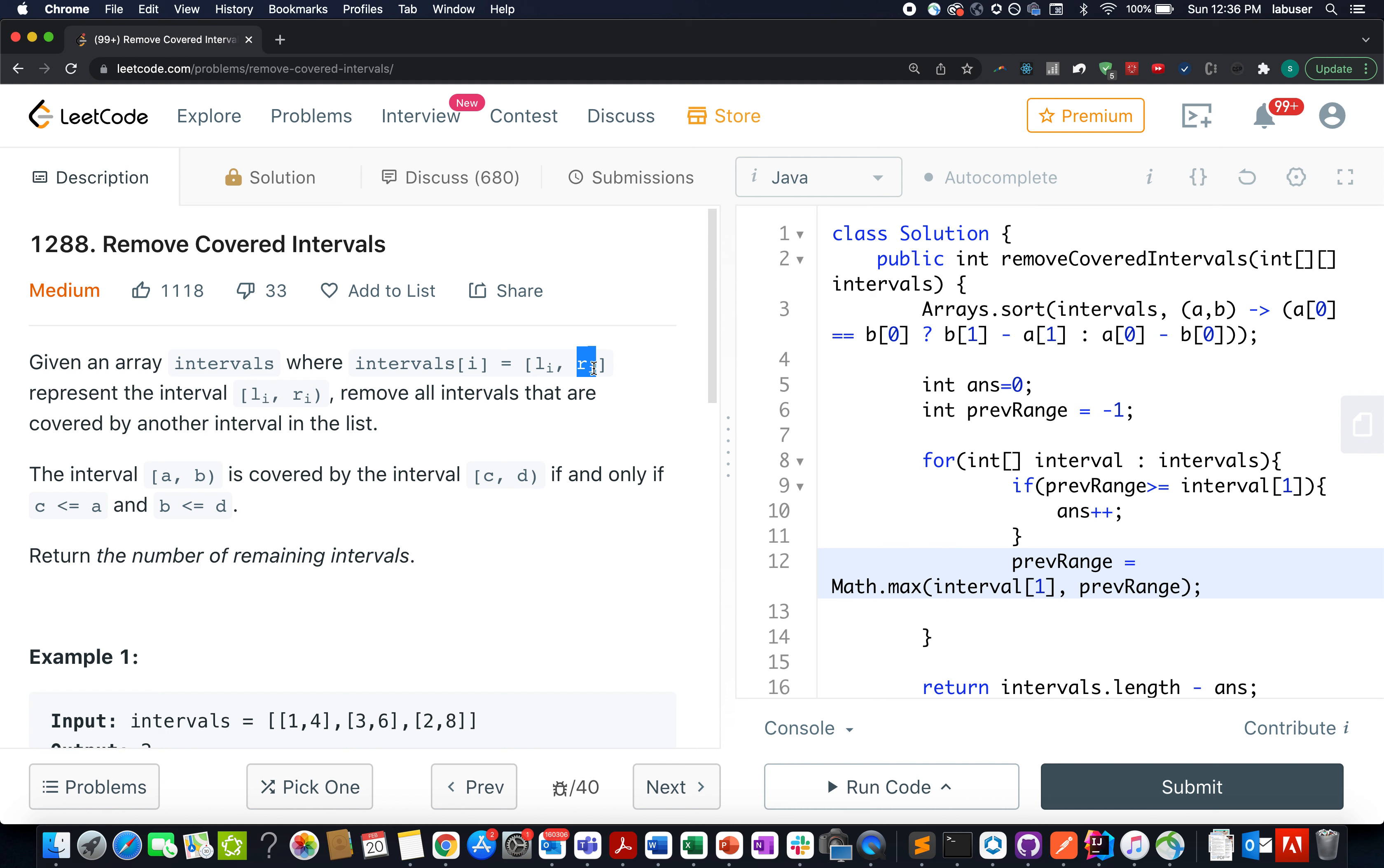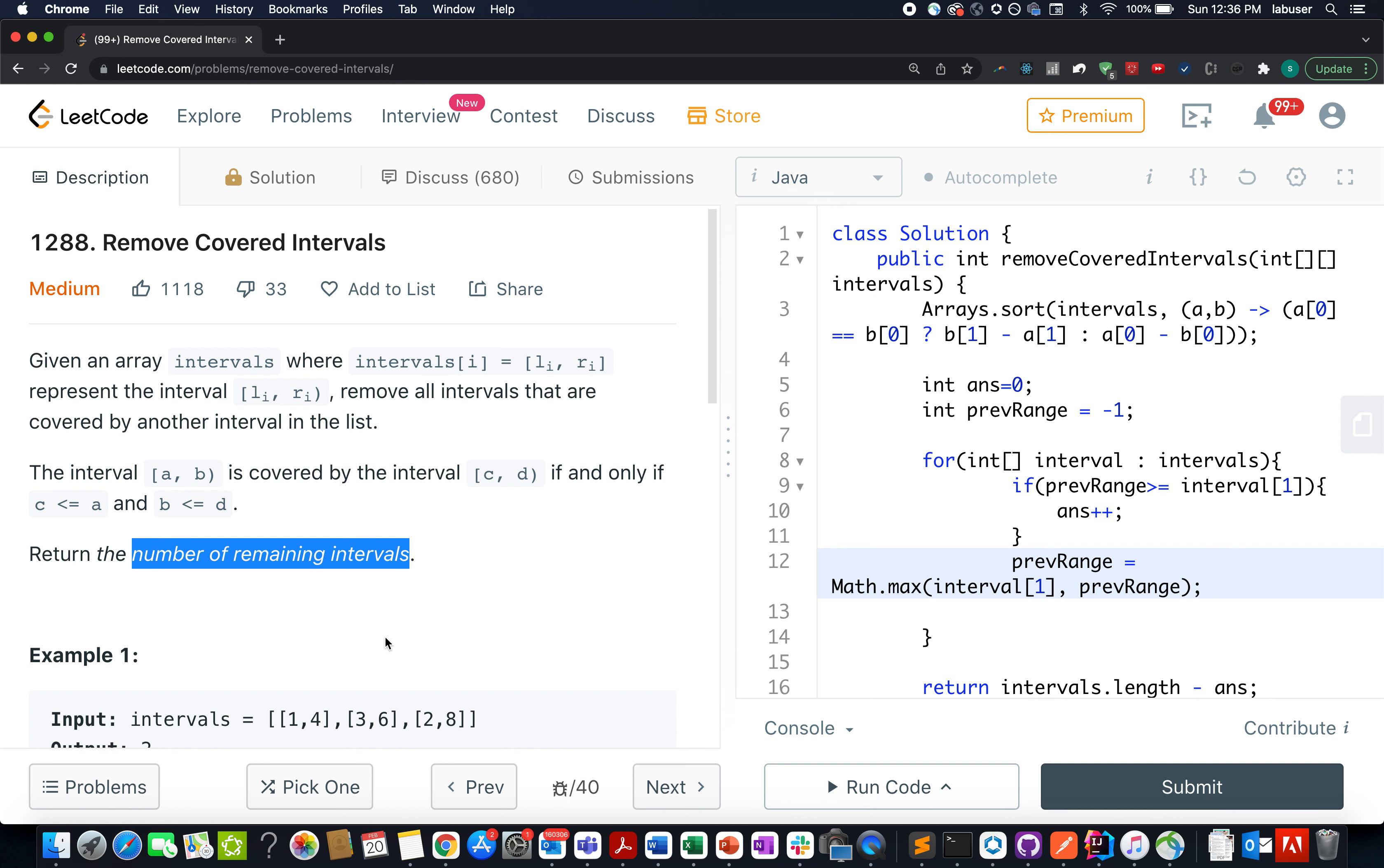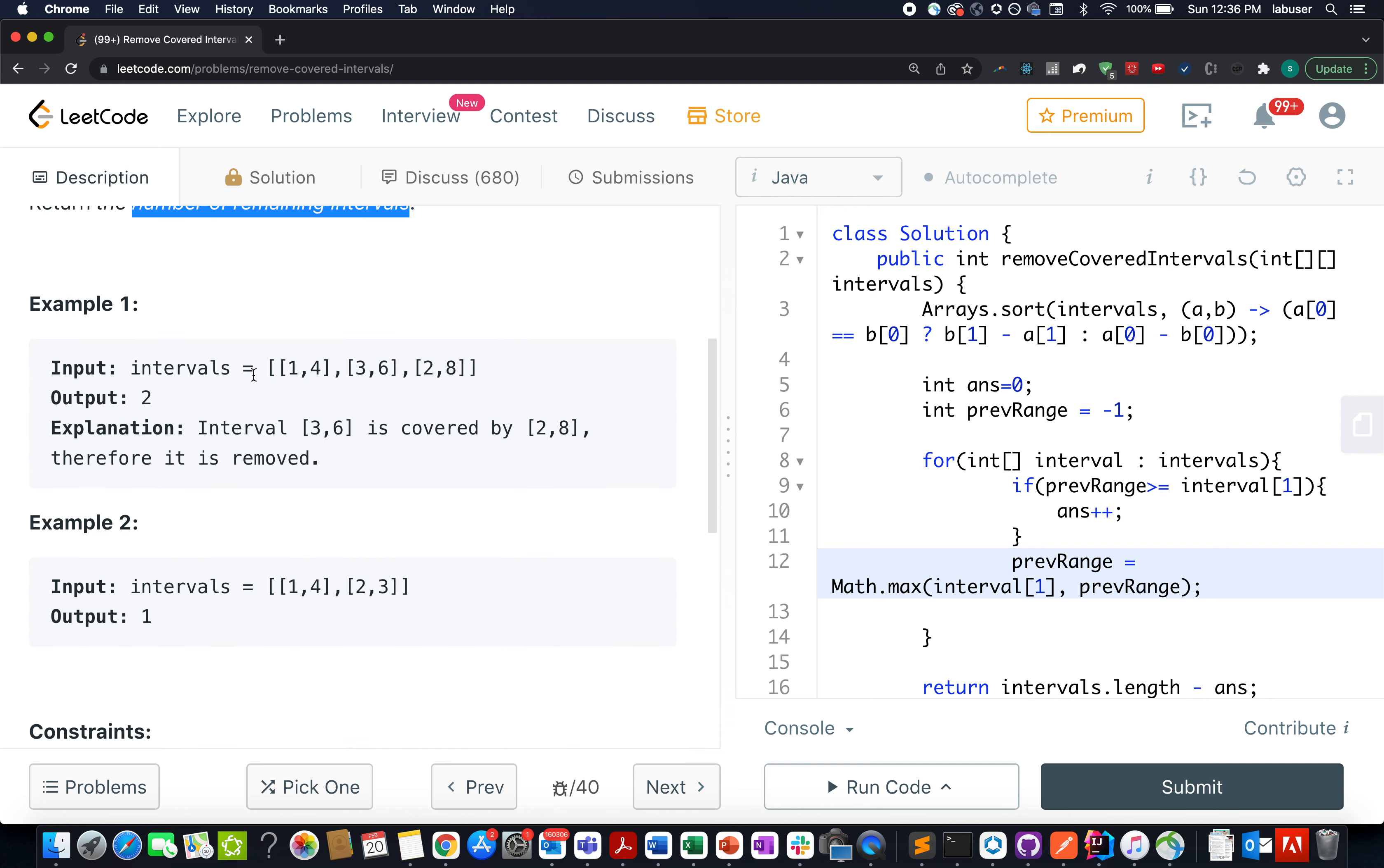We need to return the number of remaining intervals that are left after you have removed all the covered intervals. Here in this example they have provided us with an interval set as [1,4], [3,6], and [2,8]. As you can see that [3,6] is already covered by the virtue of [2,8]. As a result we can simply remove [3,6]. The number of remaining intervals is [1,4] and [2,8], and the count happens to be 2.